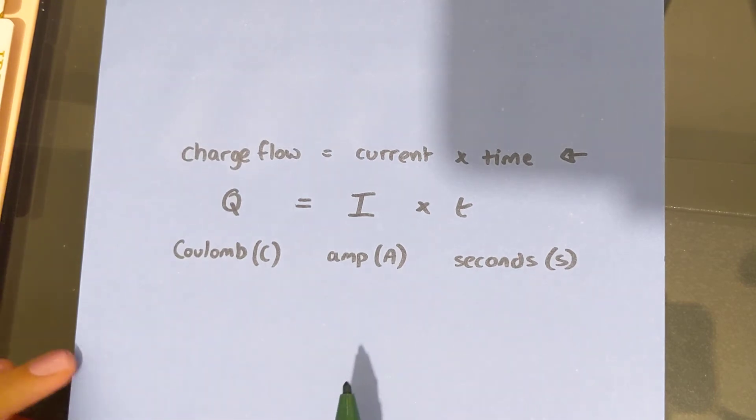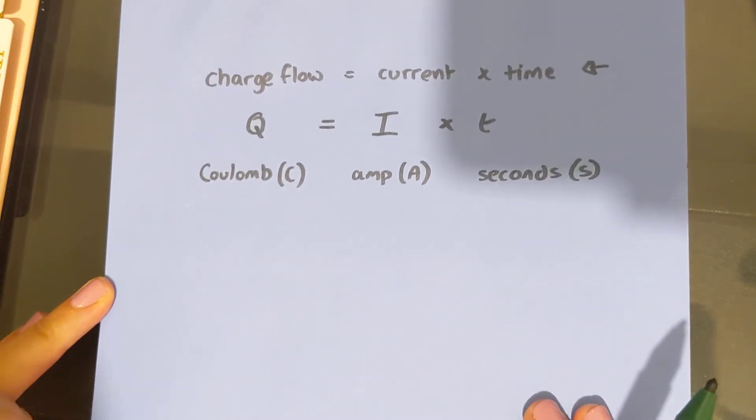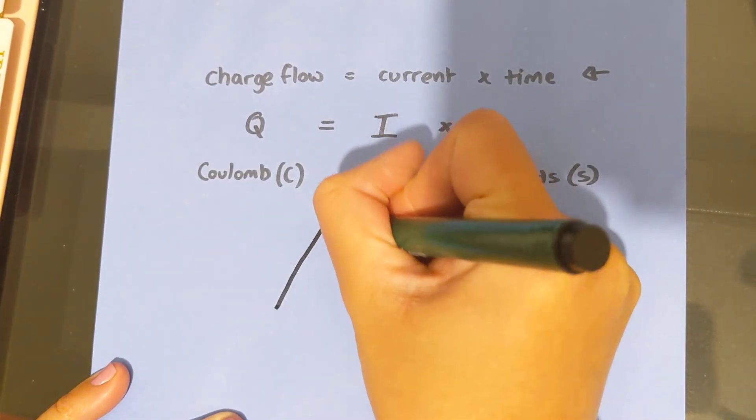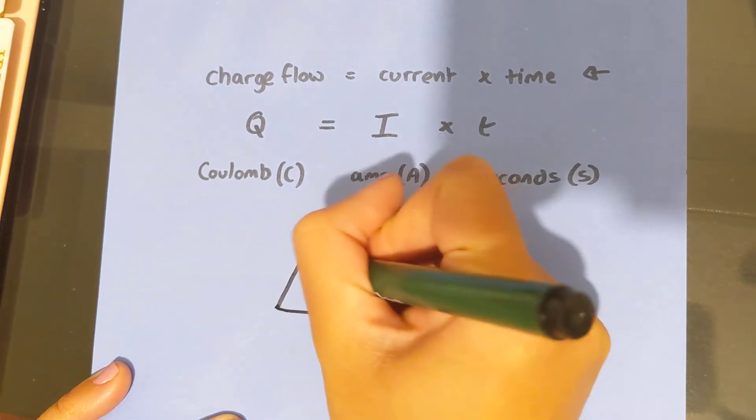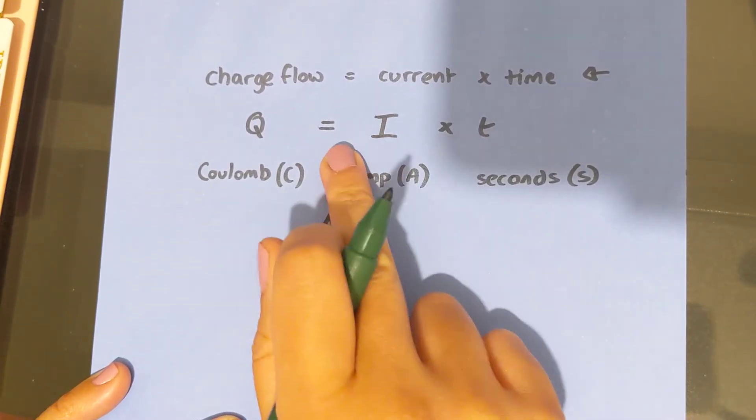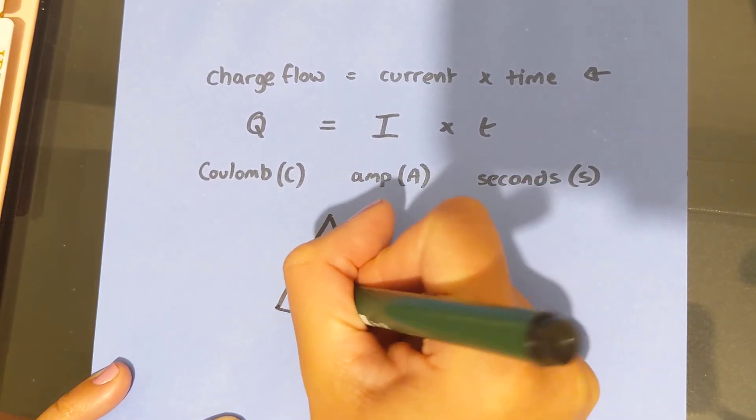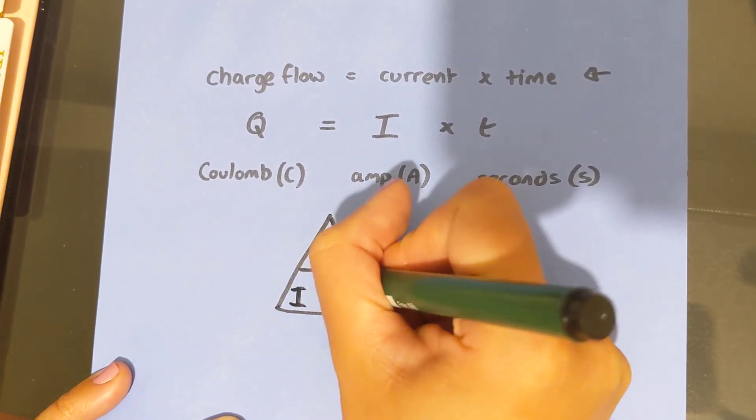So this is your equation. If we're going to put it into a formula triangle, here's what we do. So the multiplying values are at the bottom. So we're going to put I and t there.